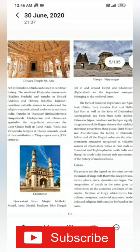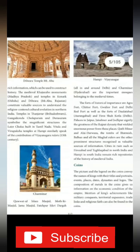Mention of kings' achievements — like military conquest, territorial expansion, trade links, and religious faith — are also found on coins. Kings' achievements include victories through military campaigns, territorial expansion to spread the kingdom, business and trade dealings, and religious faith.